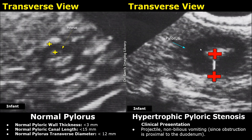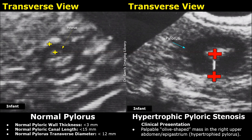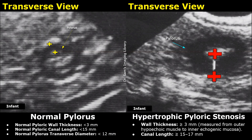Now we will look at stomach pathologies and compare their ultrasound images with normal cases. Hypertrophic pyloric stenosis occurs in infants — it is an abnormal thickening of the pylorus which causes gastric outlet obstruction. Its clinical presentation includes projectile non-bilious vomiting, a palpable olive-shaped mass in the right upper abdomen or epigastrium which is the hypertrophied pylorus, and visible gastric peristalsis called caterpillar waves across the abdomen after feeding. The normal pyloric wall thickness is less than 3 millimeters in infants, the normal pyloric canal length is less than 15 millimeters, and the normal pylorus transverse diameter is less than 12 millimeters.